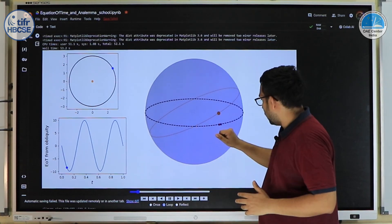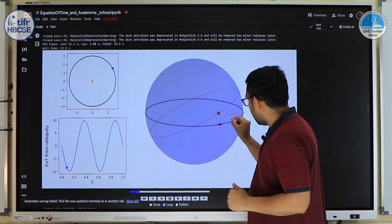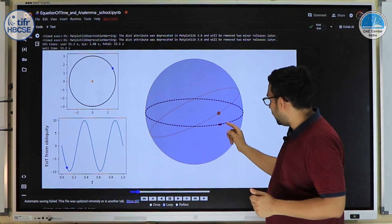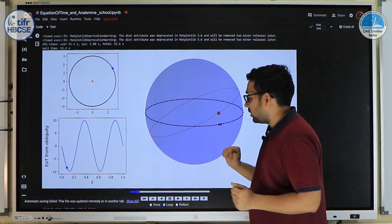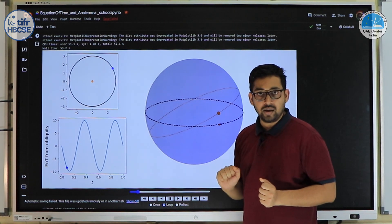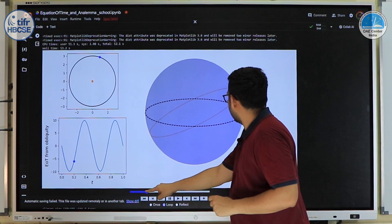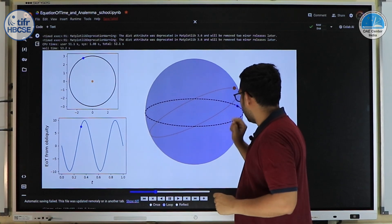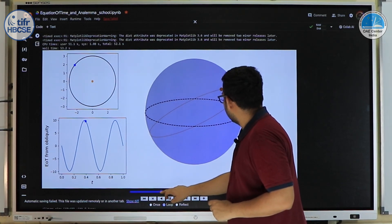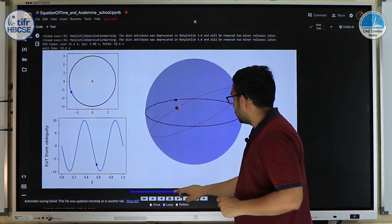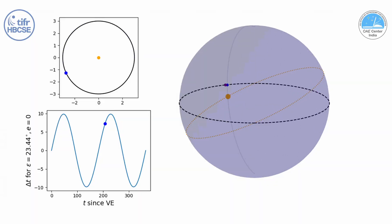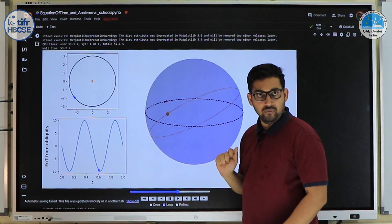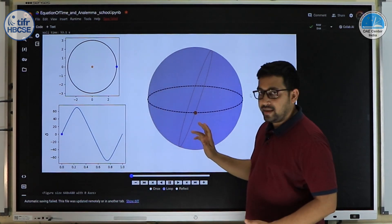The declination starts at zero at the vernal equinox, rises to the maximum obliquity angle at summer solstice, returns to zero, goes to the negative of the obliquity angle, and back to zero. In this animation, we introduce a purple dot as the Mean Sun — where the Sun would be along the celestial equator if there were no obliquity and no eccentricity. The red dot represents the Sun lagging behind in right ascension; after summer solstice the Sun's RA leads and is shown in blue.